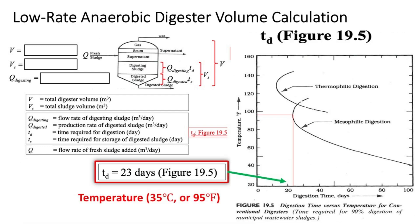Once fresh sludge enters the digester, it decomposes through anaerobic digestion. The digestion time TD is directly related to the activity of anaerobic microorganisms, and temperature is a decisive factor. Higher temperatures favor microbial activity. In this problem, the operating temperature is 35°C (approximately 95°F). Using a graphical solution, the digestion time TD is estimated to be 23 days.